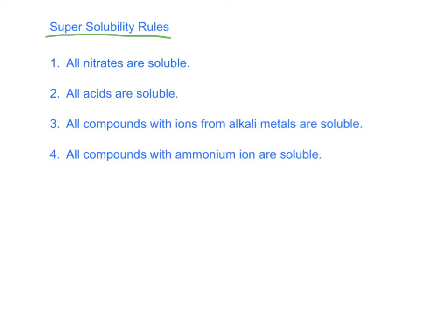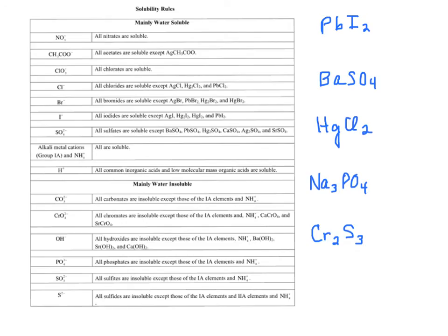The first one is that all nitrates are soluble. So any compound with nitrate in it is going to dissolve. All acids are soluble. All alkaline metal compounds are soluble. Remember the alkaline metals? Those are your sodium ion, potassium ion, etc. The first group. And all compounds with ammonium ion are soluble. So those are the ones you're going to have to memorize. And if that seems horrible, watch what you don't have to memorize. All of these rules. These are your solubility rules. And so you're not going to memorize them. Instead, I just want to make sure you know how to use them.